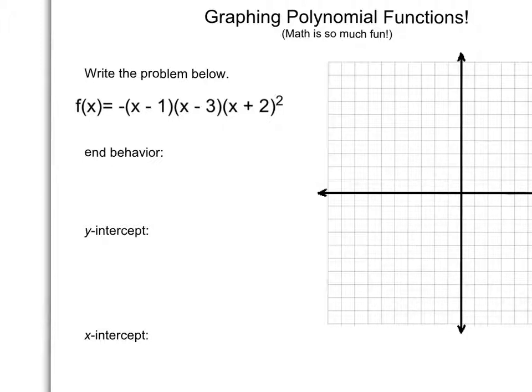Now something we haven't talked about yet is called a multiplicity. Anytime it's factored out into parentheses and you have a 2 as your exponent, that's called a multiplicity of 2. And any time you have an even multiplicity, that means your graph is just going to touch the x-axis instead of go through the x-axis.